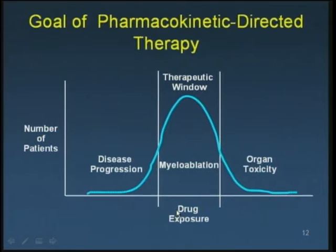Sinusoidal obstruction syndrome and veno-occlusive disease can occur in about 20% of patients after bone marrow transplantation and is fatal in up to 50% of cases, making it a significant dose-limiting toxicity. The goal of TDM — in the case of busulfan termed pharmacodirected therapy — is to place the majority of patients within the therapeutic window, with relatively few experiencing disease progression due to low levels or organ toxicity due to high levels.